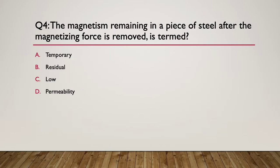Moving on now to question four. The magnetism that remains in a piece of steel after the magnetizing force is removed is termed what? So the question is the magnetism remaining in a piece of steel after the magnetizing force has been removed. What's it termed? Temporary, Residual, Low, or Permeability. So pause here.